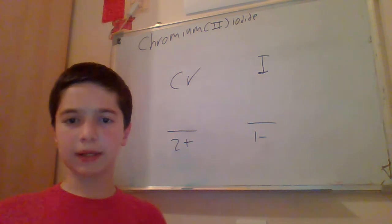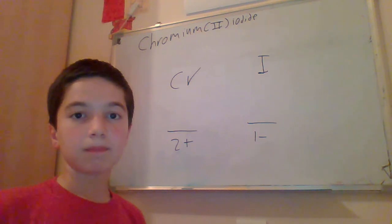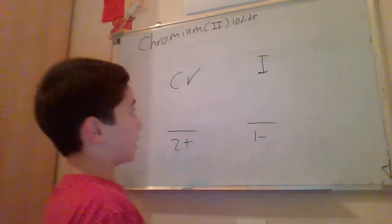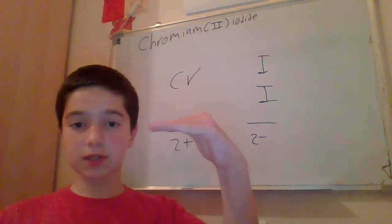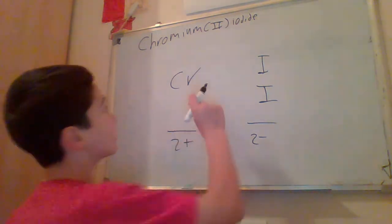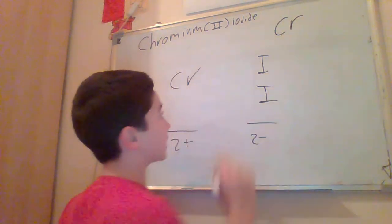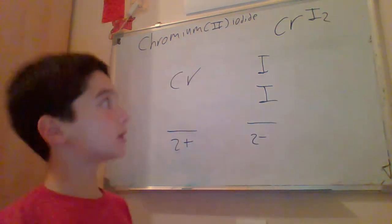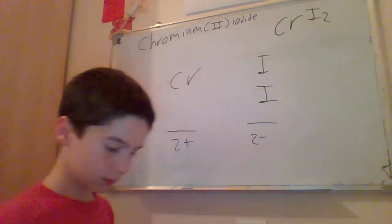The charges are not balanced: two plus and one minus. To balance them, we add another atom of iodide, giving us a two minus charge. Now two plus and two minus charges are balanced. So we have one chromium and two iodine atoms. The formula is CrI₂.